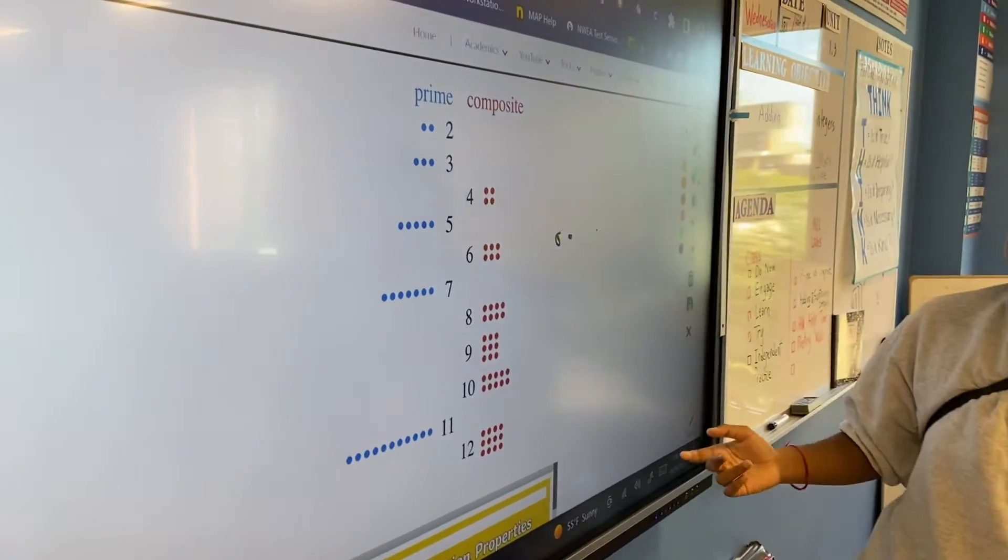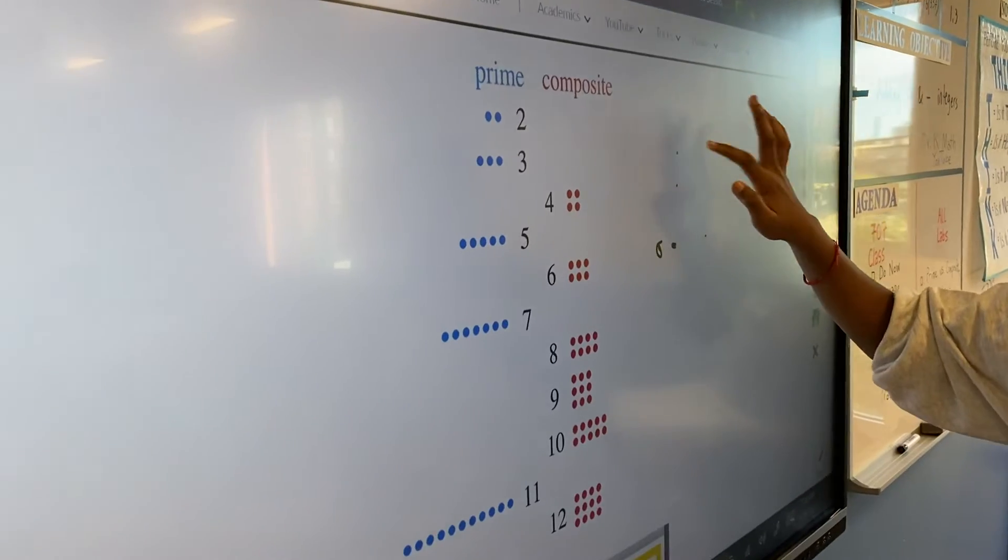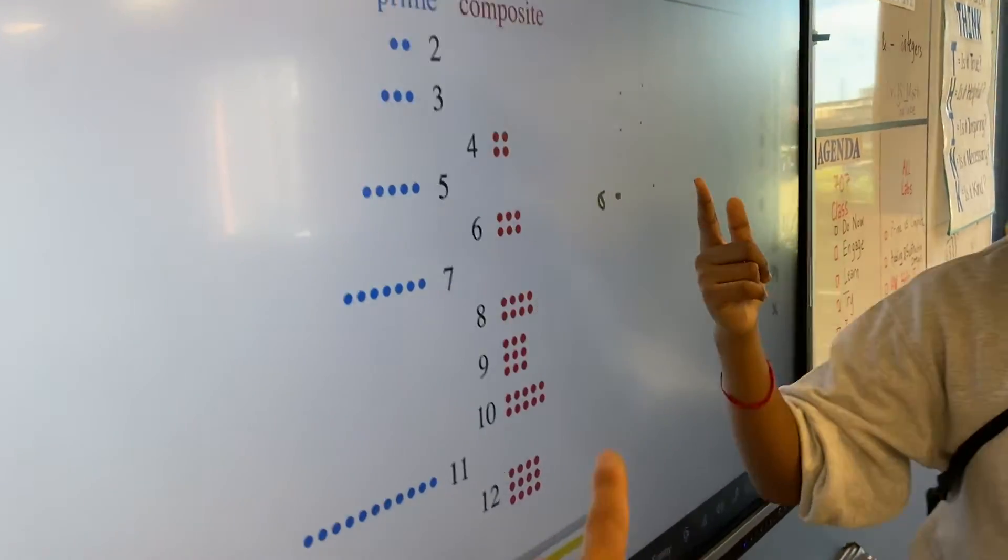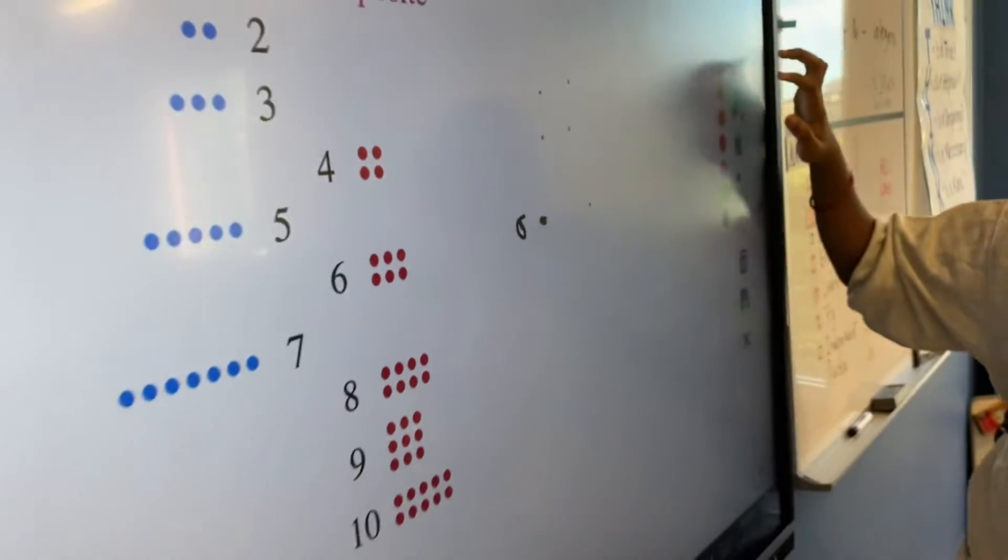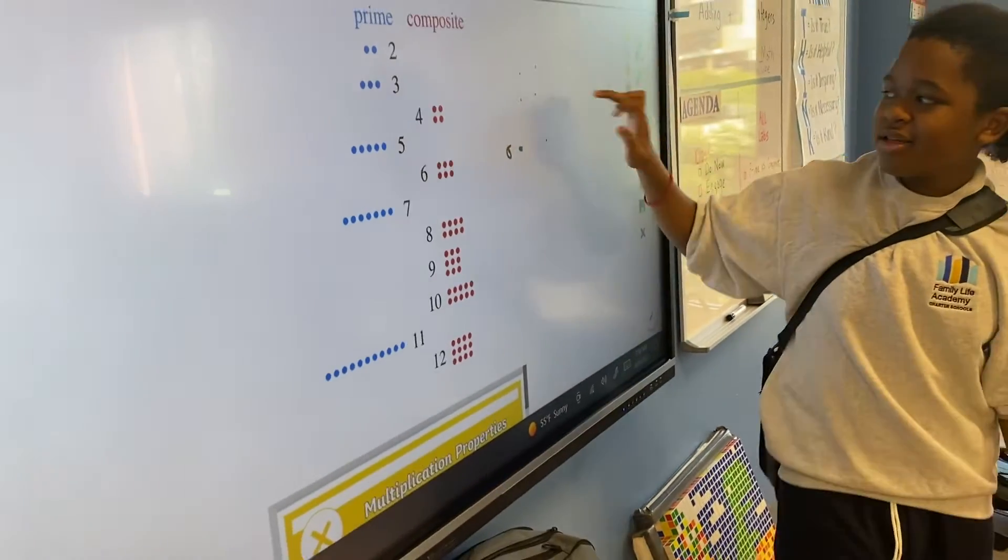For example, four, as you can see, can be put into a square. Can you mind using the thick pointer? Because it can be put into a square, right?